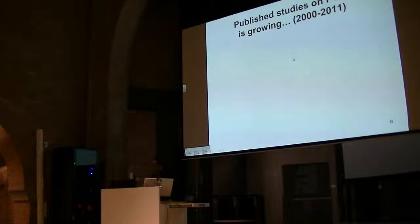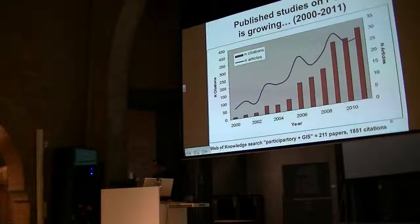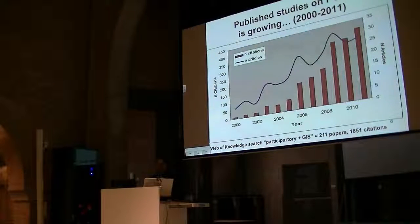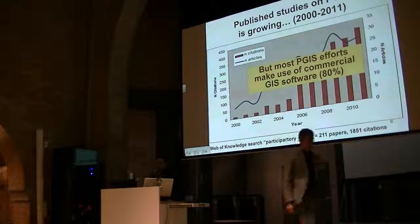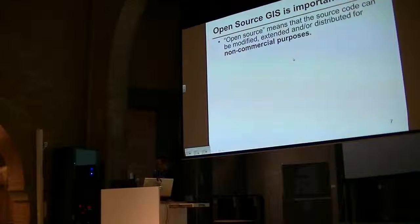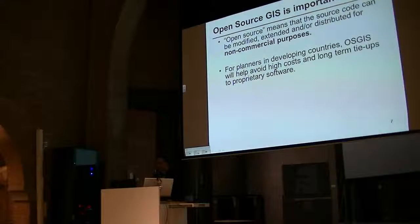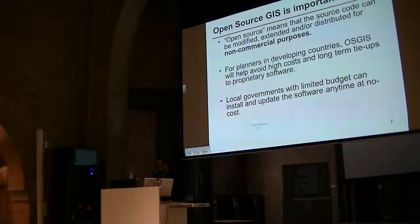If you check the Web of Knowledge for the past 10 years, published studies on participatory GIS have been growing — 211 papers with 1,851 citations, growing from the year 2000. But 18% of them use commercial GIS software, and this is not sustainable. Open source GIS is very important to participatory GIS because of its non-commercial purpose. For planners in developing countries, using open source GIS will help avoid high cost and long-term tie-ups with proprietary software, and local governments with limited budgets can install and update the software anytime at low cost.